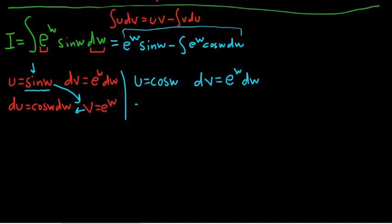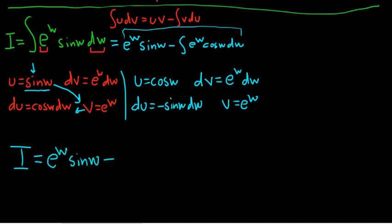Computing the derivative here, we have du. That's going to be negative sine w dw. And then v is equal to e to the w. All right, I'm going to rewrite what we have. We have i equals e to the w sine w minus, okay, minus. And then we're applying parts to this. So I'm going to use a bracket here.